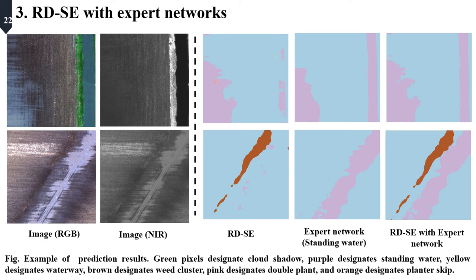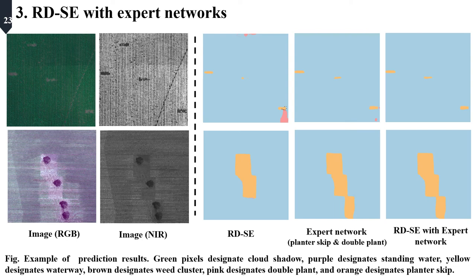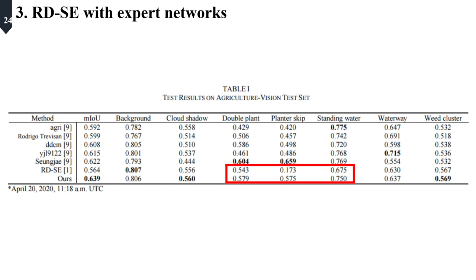This is an example of prediction results. It can be verified that the base model misclassifies certain classes. However, by using expert networks, this is compensated. In another case, the base model can also be improved by expert networks. This table shows the effectiveness of expert networks, and it can be verified that the performance of the base model is improved by using the proposed method.